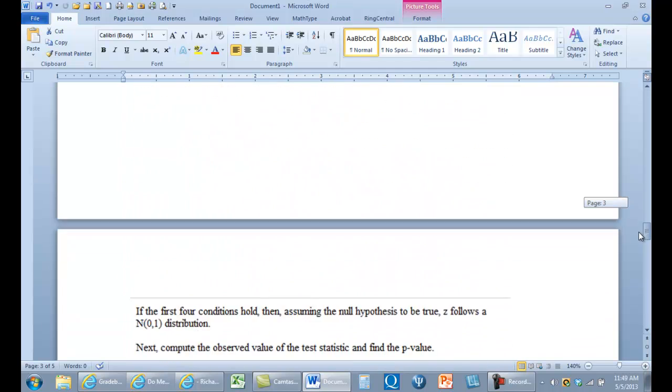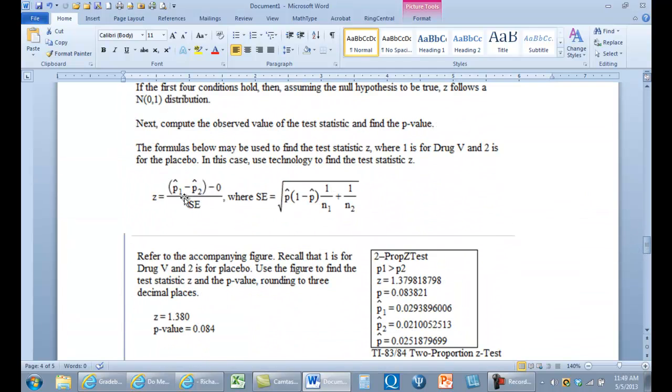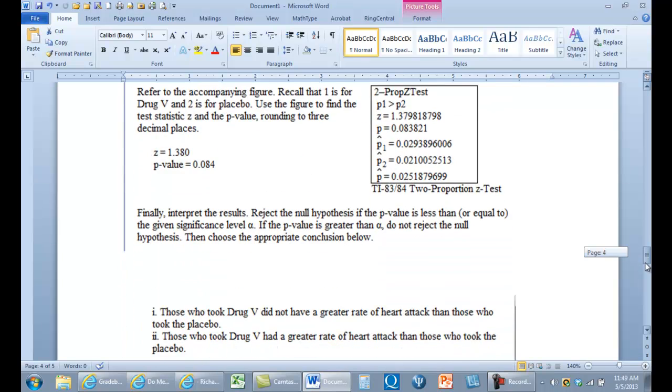So that's P hat. So we've got that one, that one. And then we need the standard error. The standard error is given by P hat. And then one, one, two. So we already know all these values. We don't need technology to compute Z. But this is the question that's been asked. How do we compute Z using technology?